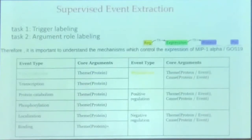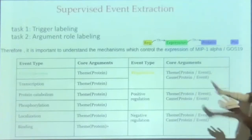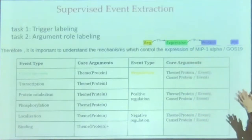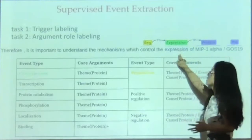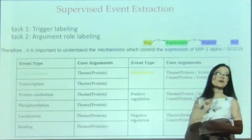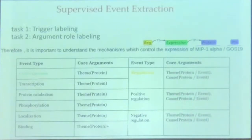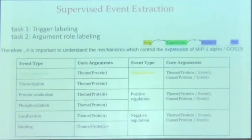The more interesting thing is about events. The big difference between biomedical events and news events is that in biomedical events, you can use another event as your argument. Here you can see: 'control the expression of something' — expression itself is an event, and this event serves as a theme argument for the regulation event. We don't see this kind of phenomenon in news. In biomedical literature, this happens a lot. That means you really need to figure out the syntactic structure and figure out which entities and which events are playing what kind of role in another event. We need better analysis of structure and a smarter way to leverage that.